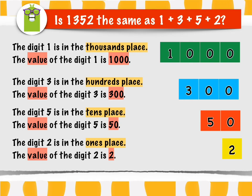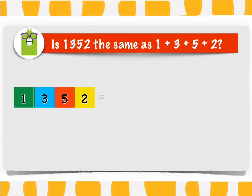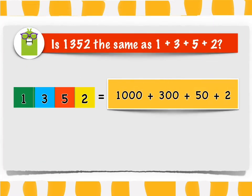So, is 1,352 the same as 1 plus 3 plus 5 plus 2? 1,352 is the same as 1,000 plus 300 plus 50 plus 2.